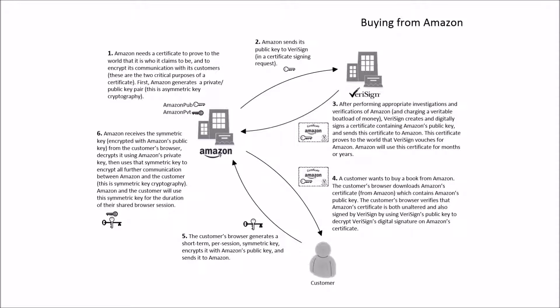Amazon receives the symmetric key encrypted with Amazon's public key from the customer's browser, decrypts it using Amazon's private key, then uses that symmetric key to encrypt all further communication between Amazon and the customer. This is symmetric key cryptography. Amazon and the customer will use this symmetric key for the duration of their shared browser session.